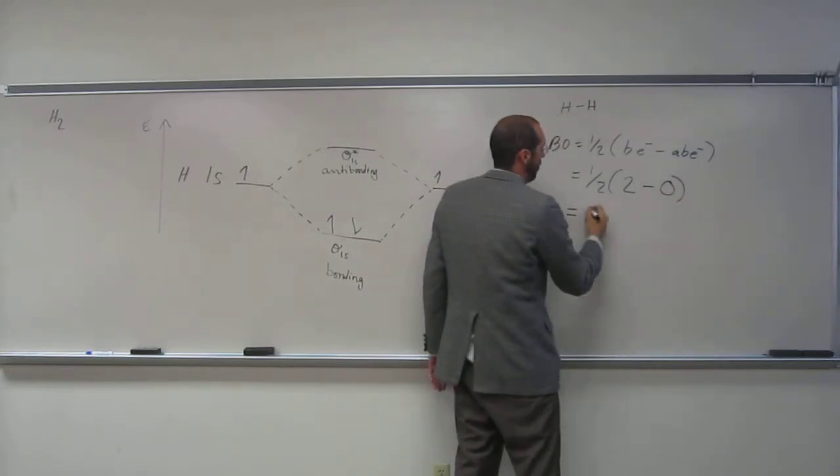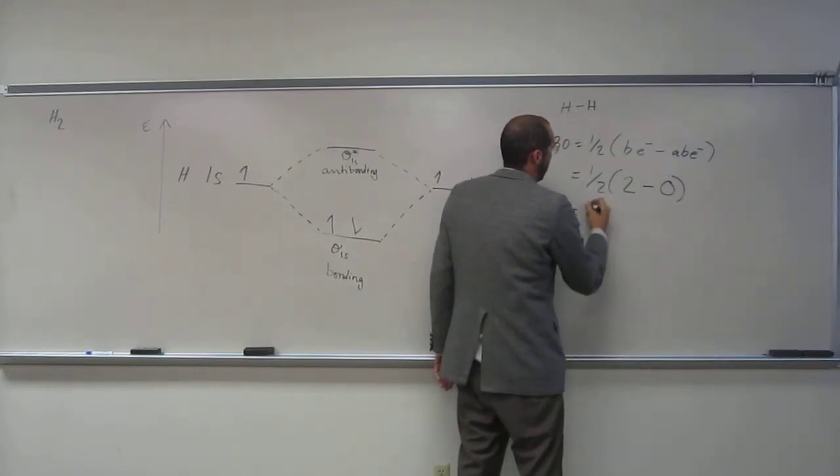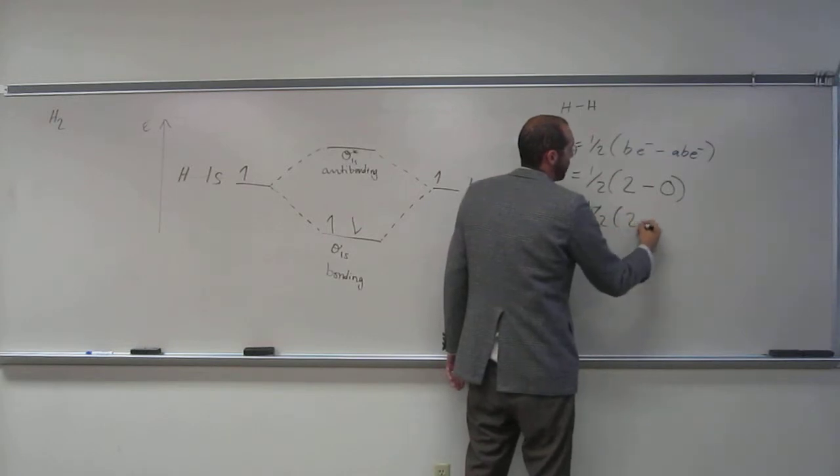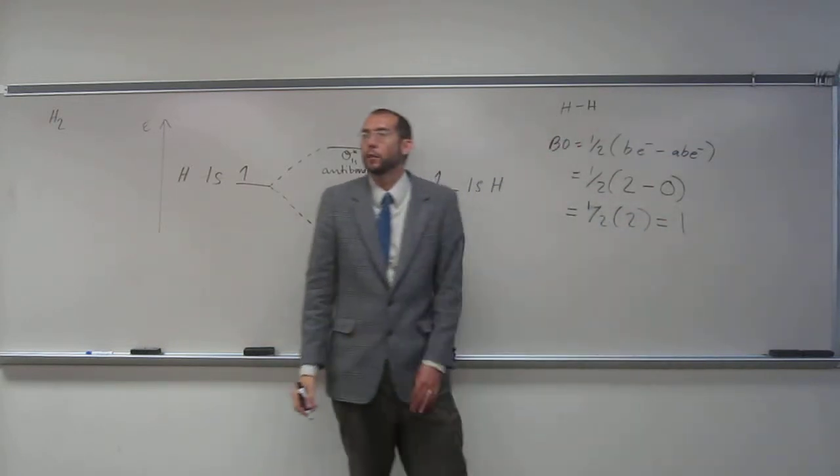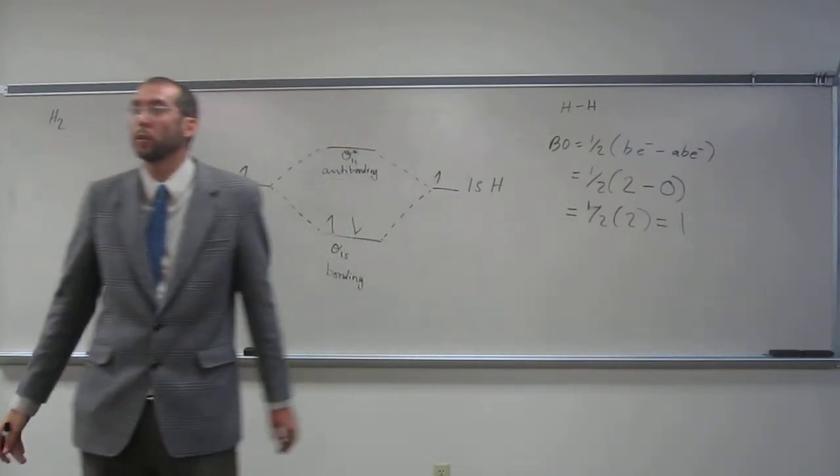So one-half, one-half times two is one. So that's how many bonds there are going to be between those two hydrogen atoms.